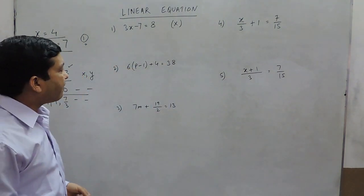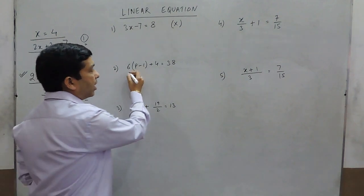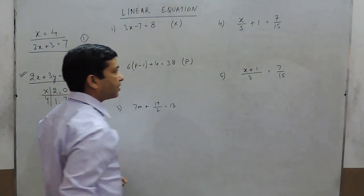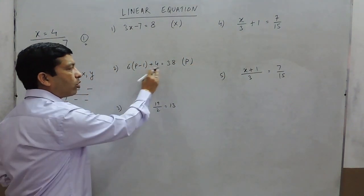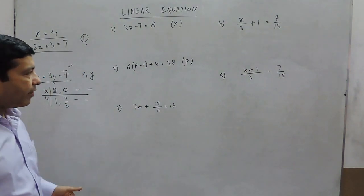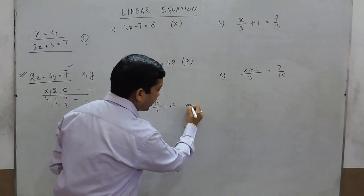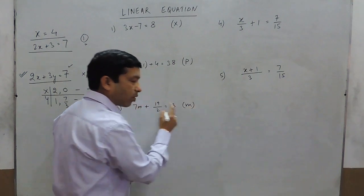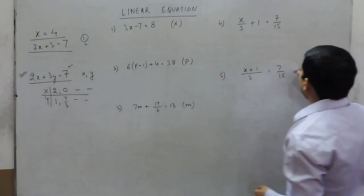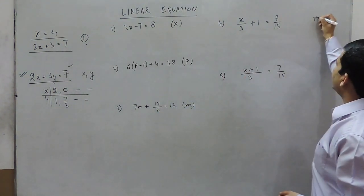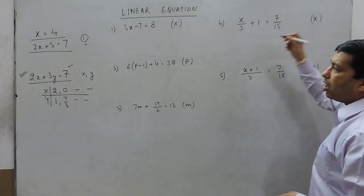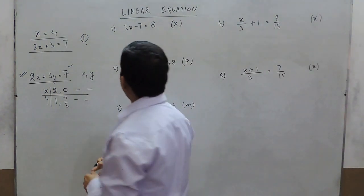Similarly, an equation where the only variable is p — with numerical values like 4 or 38 — is also a linear equation in one variable. Here the variable is m, but again there is only one variable. In these cases where x is used, they are all examples of linear equations in one variable.